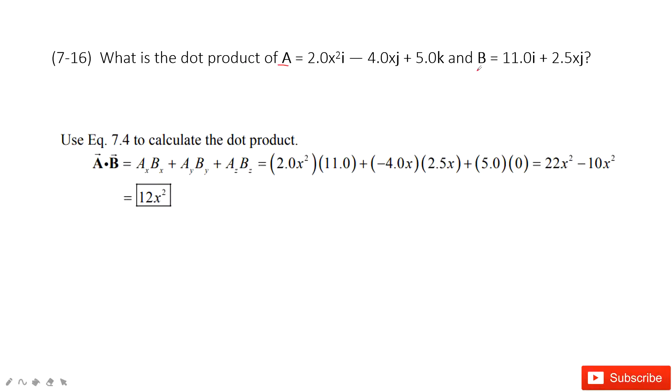You can see these two vectors A and B are written in the x, y, and z components. If we do the vector product, dot product, A dot B...